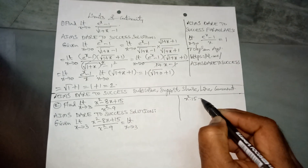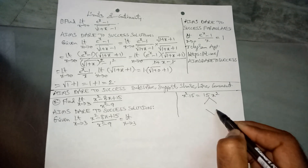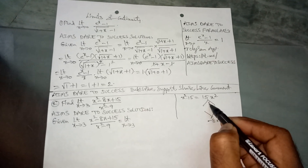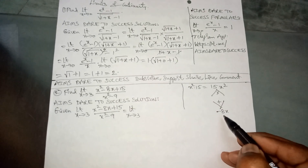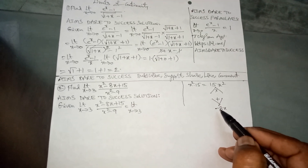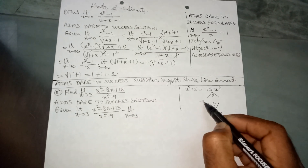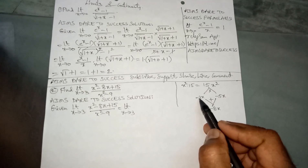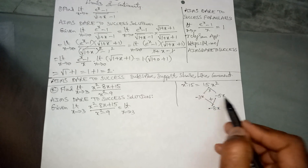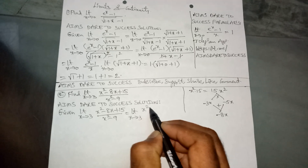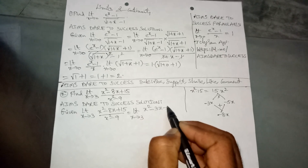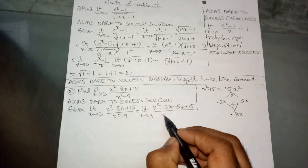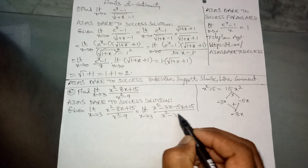The middle value is minus 8x. We need two numbers that multiply to 15x² and add to minus 8x — those are minus 3x and minus 5x, since minus 3 minus 5 equals minus 8, and minus 3 times minus 5 equals plus 15. So we write x² - 3x - 5x + 15 in the numerator. The denominator x² - 9 is x² - 3².